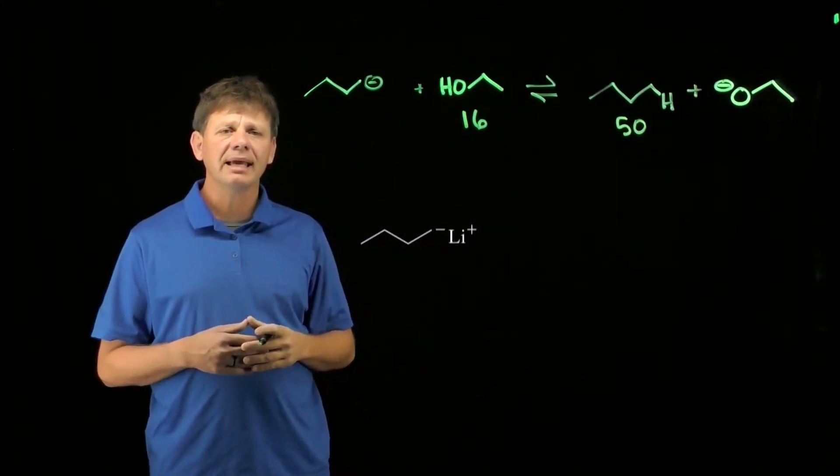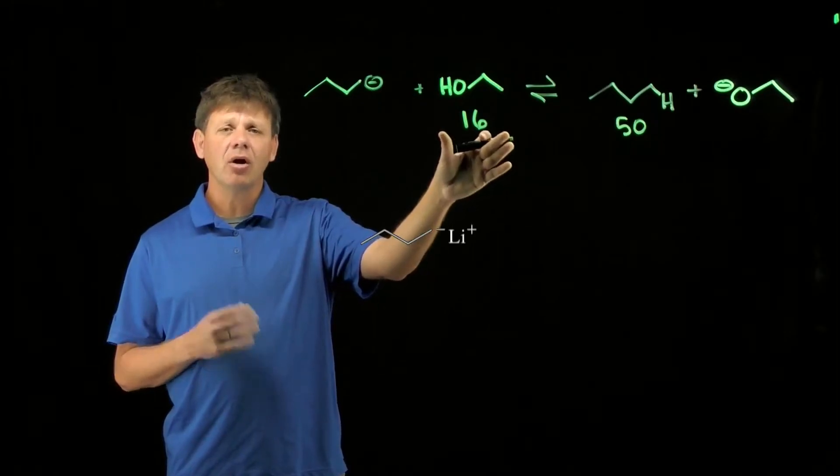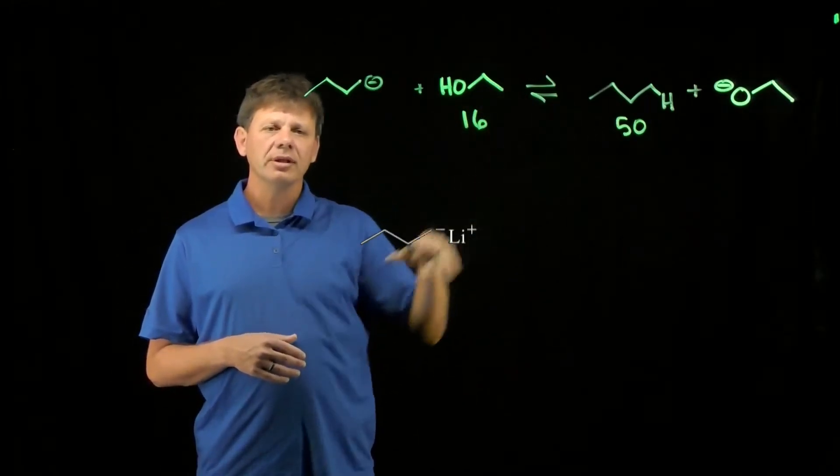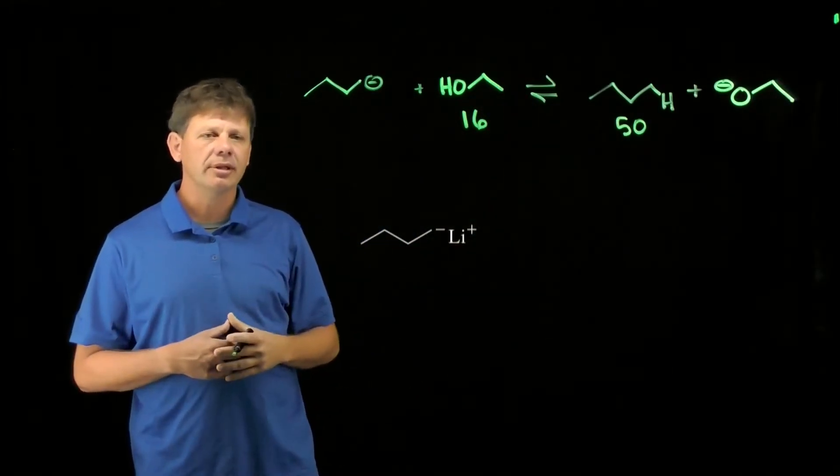With those pKa values, we see that the strongest acid is the alcohol on the left. The reaction will certainly be favored to the right. Again, answering that question.